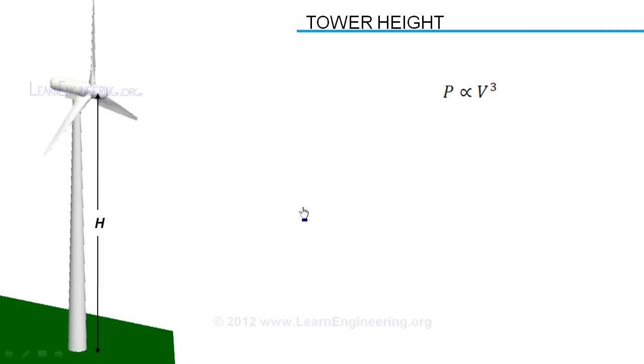A typical wind speed increase from ground level is shown in figure. So from power extraction point of view, it is desired to have tower height as high as possible.